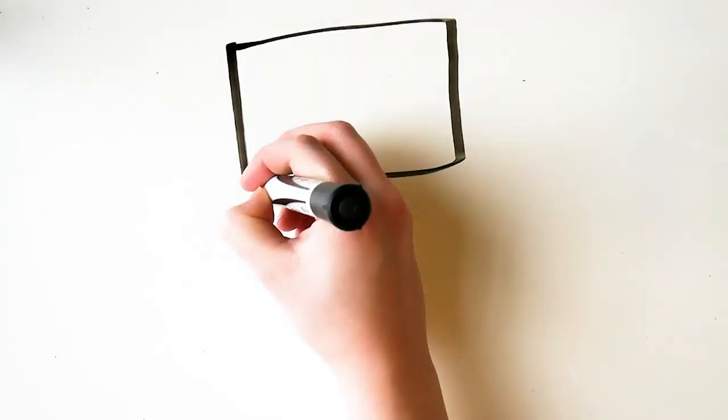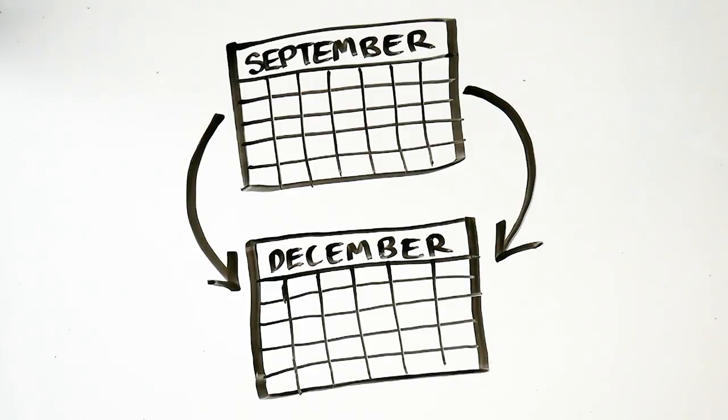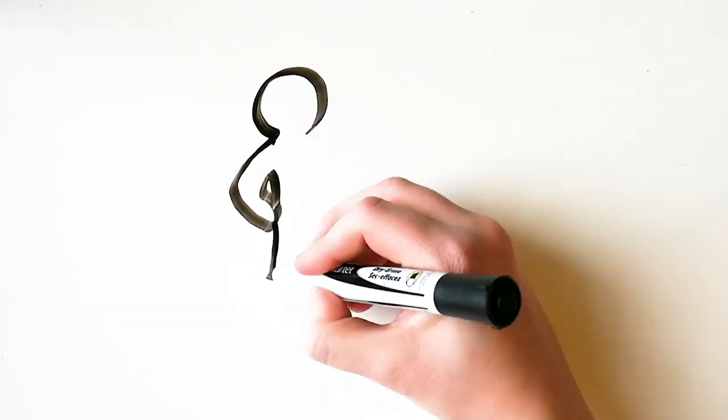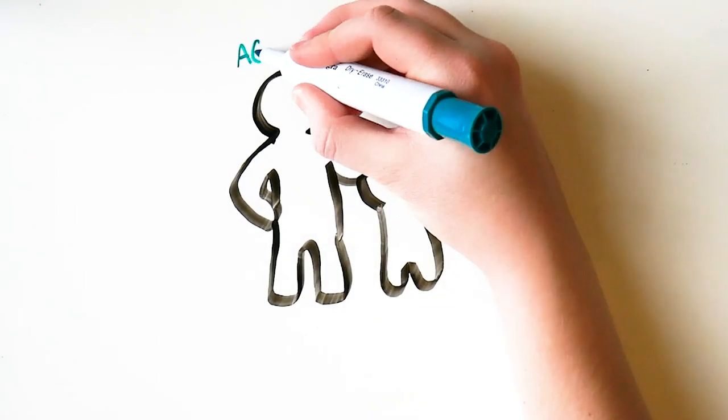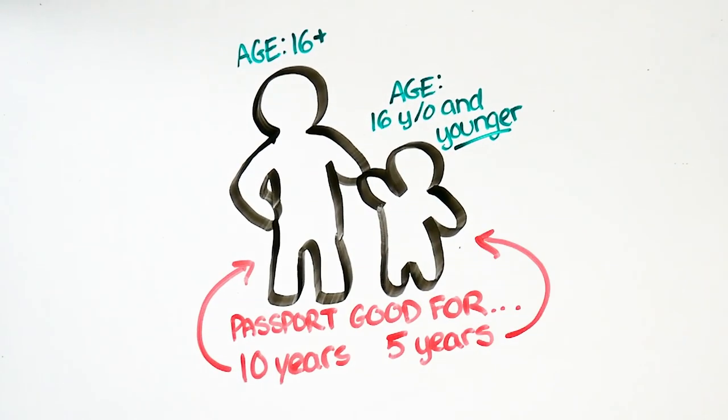According to the US State Department, the best time to apply for or renew a passport is between September and the end of December. And if you plan to travel with children, remember that children's passports are only valid for five years, while adult passports are valid for ten.